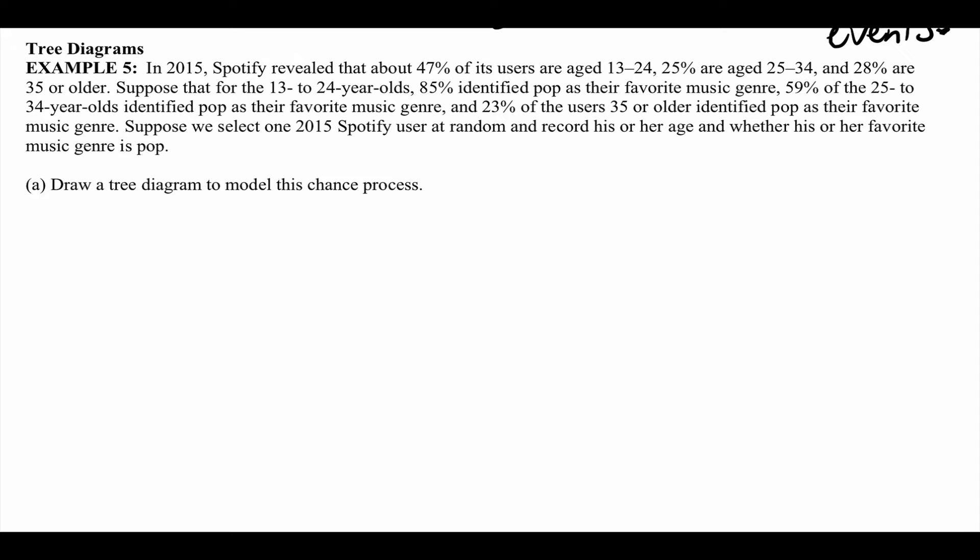Problem five: In 2015, Spotify revealed that about 40% of its users are aged 13 to 24, 25% are aged 25 to 34, and 28% are 35 and older. For the 13-to-24 age group, 85% identified pop as their favorite genre. 59% of the 25-to-34 year olds identified pop, and 23% of those older than 35 identified pop. We select one Spotify user at random and record their age and whether their favorite music is pop.